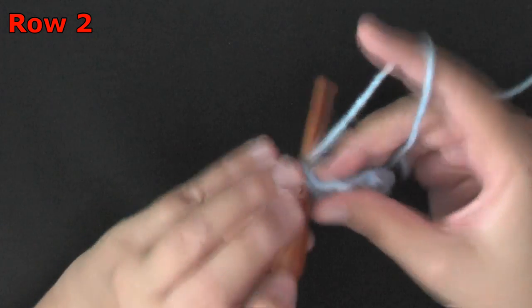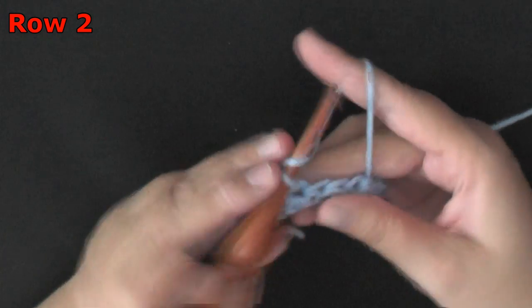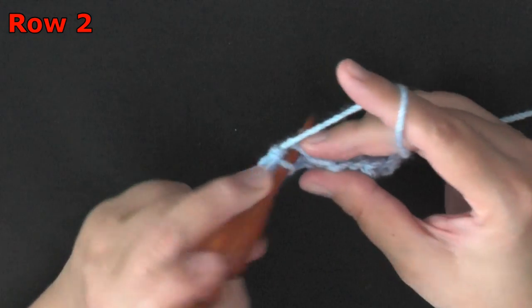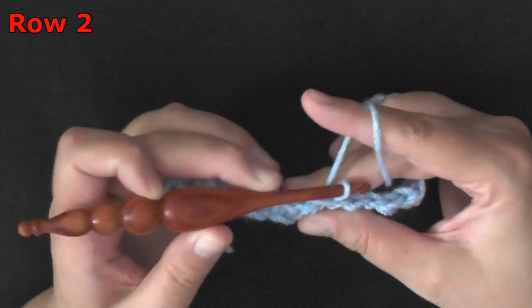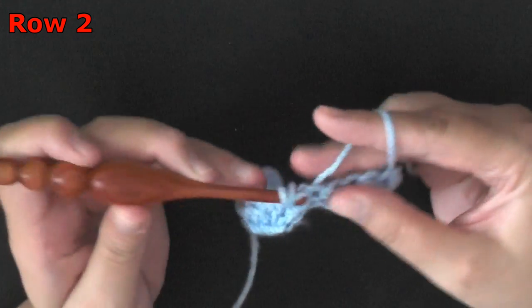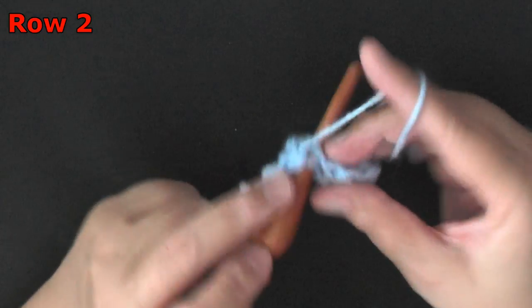So half double crochet, slip stitch. It's very simple. Just take your time. Make sure that you always go under both loops of the correct stitch. You're not going to be going under only one loop. You'll be going under both loops of the stitch.